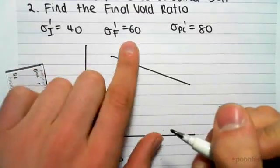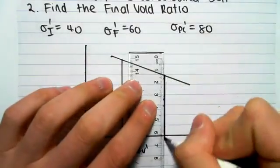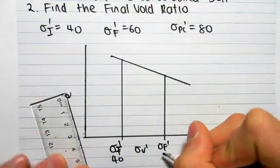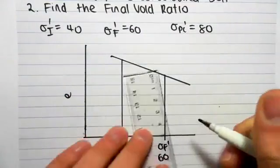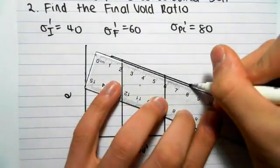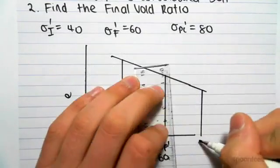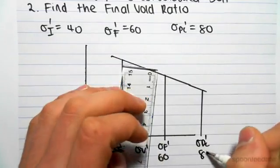I then increase, so over time I then go to 60, so my final effective stress is 60, and I know that my pre-consolidation is 80. Sigma PC is equal to 80.